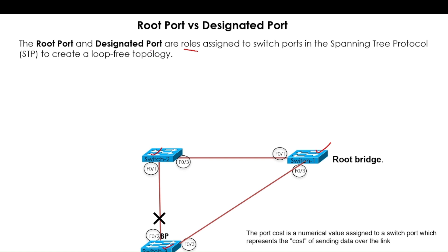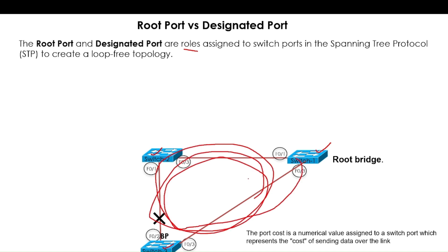If you don't have Spanning Tree Protocol on these switches, a loop will be created where a packet is forwarded from one switch to another and back, creating a loop. To avoid this loop and create a loop-free topology, we have the Spanning Tree Protocol.